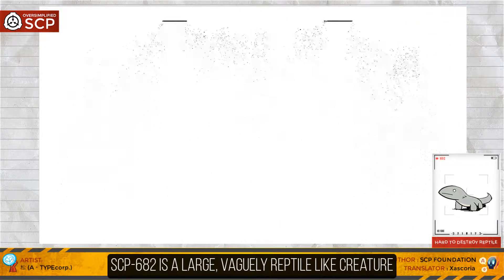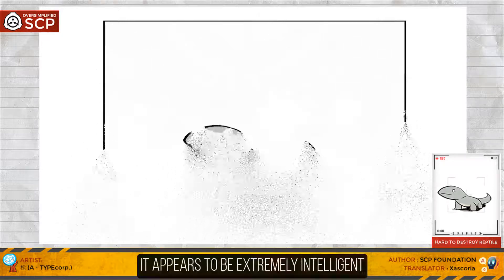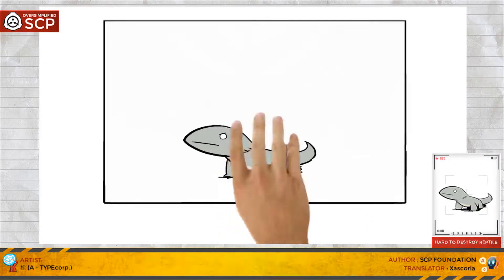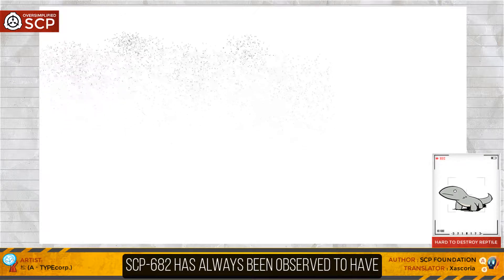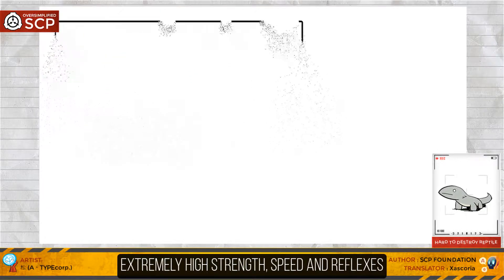SCP-682 is a large, vaguely reptile-like creature. It appears to be extremely intelligent. SCP-682 has always been observed to have extremely high strength, speed, and reflexes.